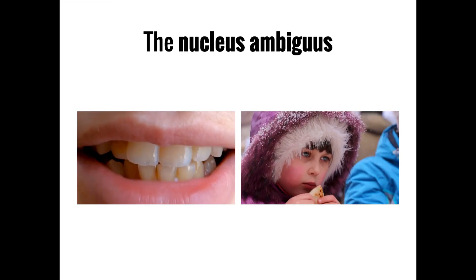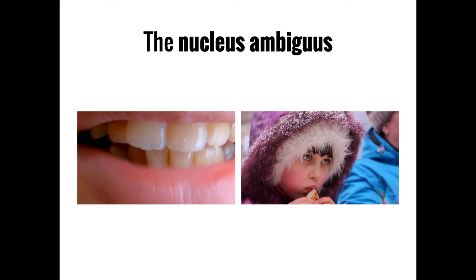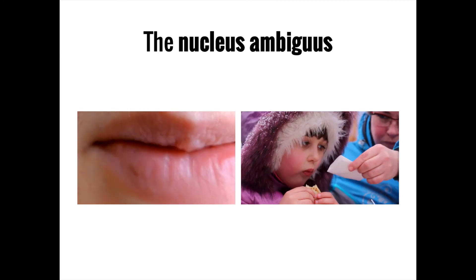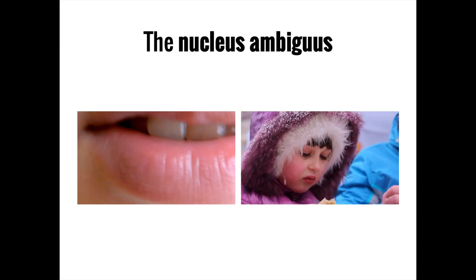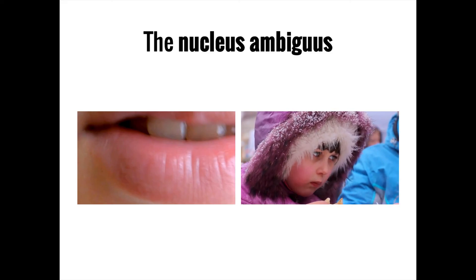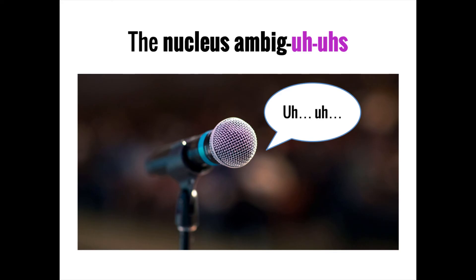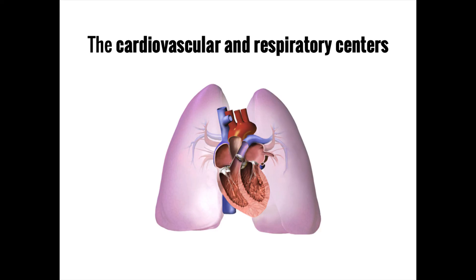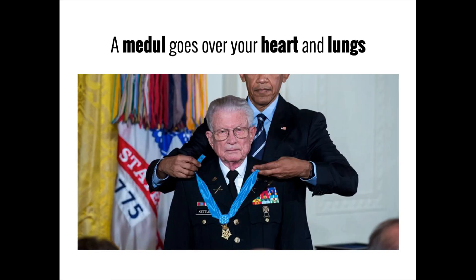The medulla oblongata also contains the nucleus ambiguus, which connects to the muscles involved with speech and swallowing. Damage to the nucleus ambiguus can lead to dysphagia (difficulty swallowing), dysarthria (trouble speaking), and dysphonia (a hoarse voice). You can remember its function by pronouncing it with two 'uhs' at the end, reminding you of someone giving a speech who keeps saying lots of 'uhs.' Vitally, the cardiovascular center and the rest of the respiratory center also lie within the medulla — you can remember these core functions by thinking of a medal being pinned over someone's heart and lungs.